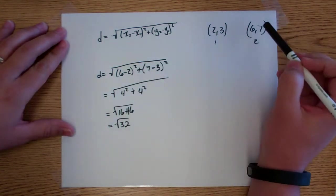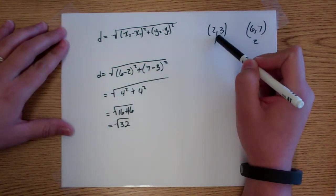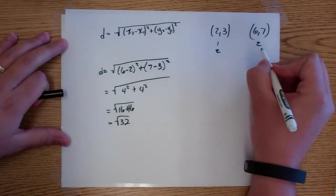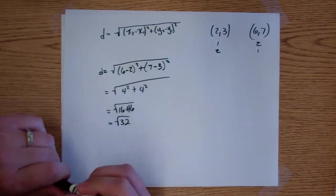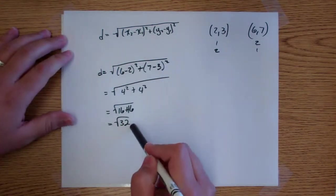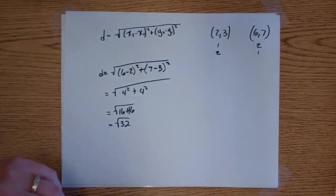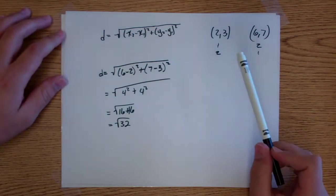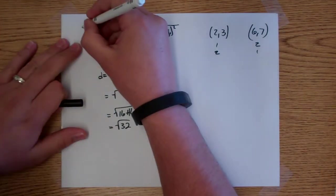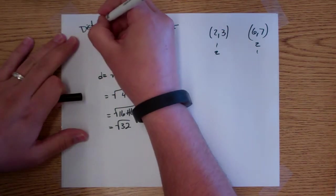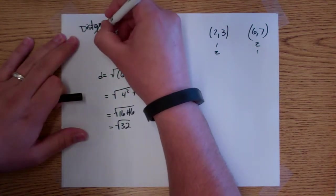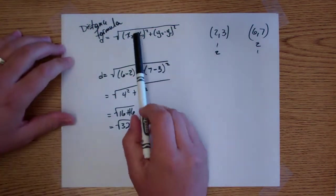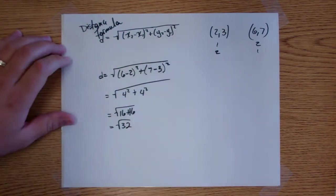So the distance formula: pick a point to be point 1, pick a point to be point 2, doesn't matter which is which — I would have gotten the same answer either way. You should have seen this in geometry and again in algebra 2. The formula is: D equals the square root of (x2 minus x1) squared plus (y2 minus y1) squared.